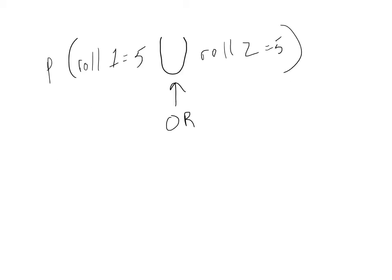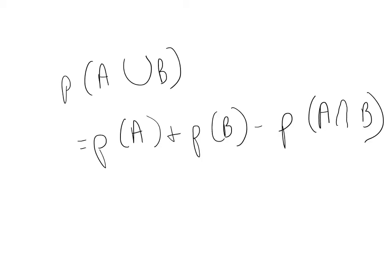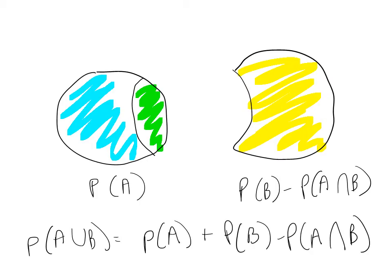We also might be interested in the probability of rolling a five on our first roll or our second roll. This is called a union, represented by the symbol shown here. The probability of A or B happening is equal to the probability of A plus the probability of B minus the intersection between A and B. When we're interested in the union, we want to count the events where only A happened (the blue), the events where only B happened (the yellow), and the events where both A and B happened (the green). But we don't want to count that intersection twice, which is why we subtract it once in the formula.